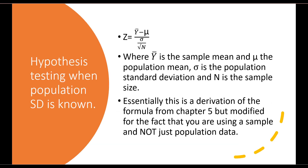Let's talk about what hypothesis testing looks like when we know the population standard deviation. This isn't typical — we don't usually know the population standard deviation — but in this example let's pretend we do. The formula for the z-score is equal to the sample mean minus the population or specified value we are interested in, divided by the standard deviation divided by the square root of the sample size. This is a derivation of the z-score formula from Chapter 5, modified for the fact that we are using samples rather than population data.